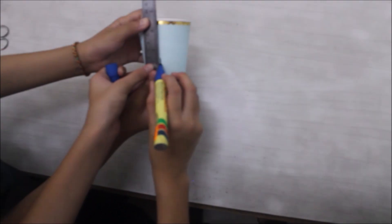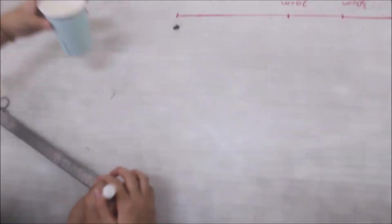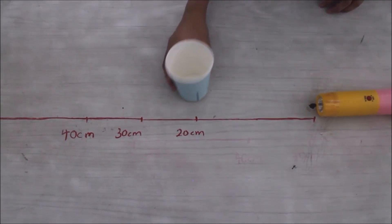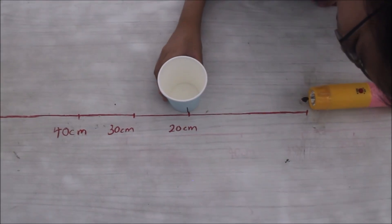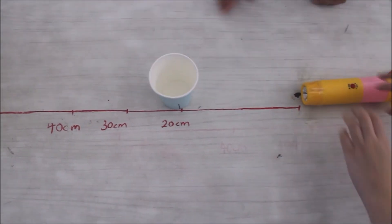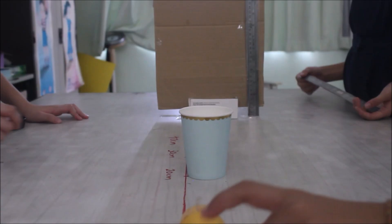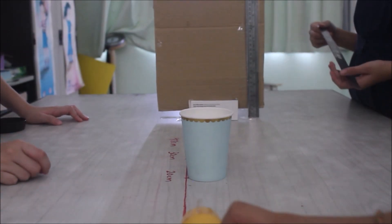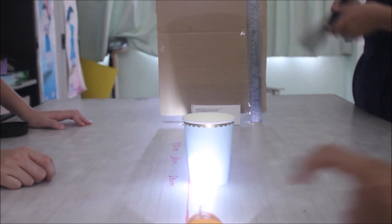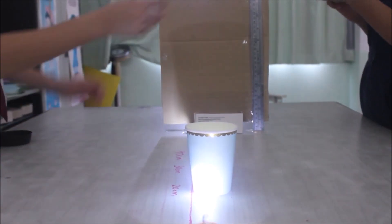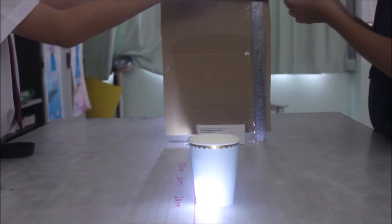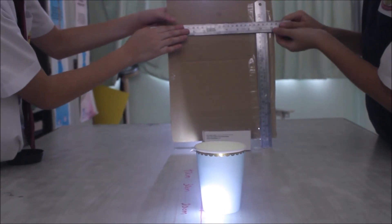Then, draw a line on the card. Put the card beside the line, then the torchlight shines on the card. The shadow will show on the screen.